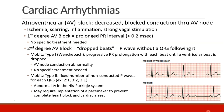AV block is divided into different degrees. First degree AV block is just a prolonged PR interval greater than 0.2 seconds, and usually no specific treatment is needed. Second degree AV block involves dropped beats where a P wave occurs without a QRS following it, and comes in two types. Mobitz type 1, also called Wenckebach, involves progressive prolongation of the PR interval with each beat until a ventricular beat is dropped altogether. The PR interval goes short, longer, longer, then no QRS at all, then short again. These patients usually don't need specific treatment, and if it's anesthesia-related it will often resolve on its own.